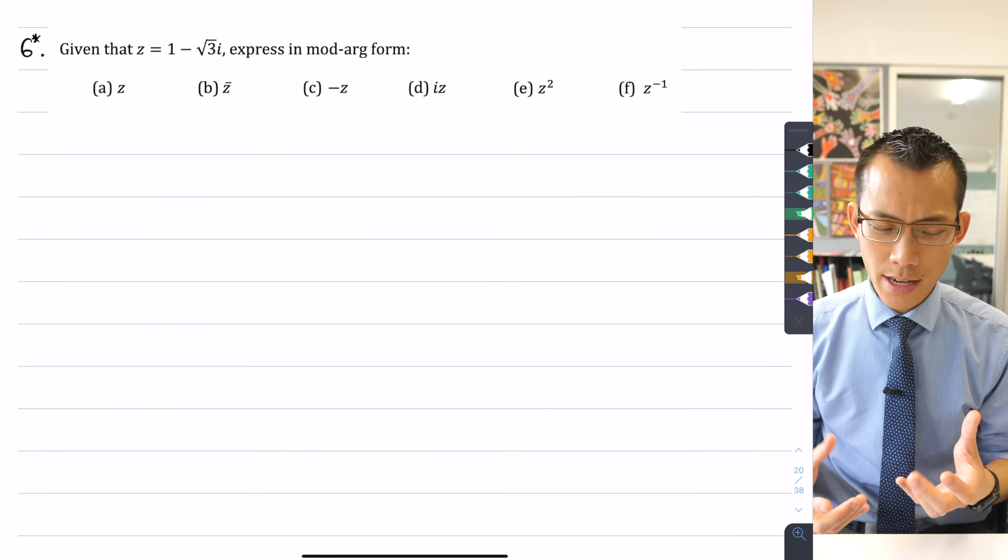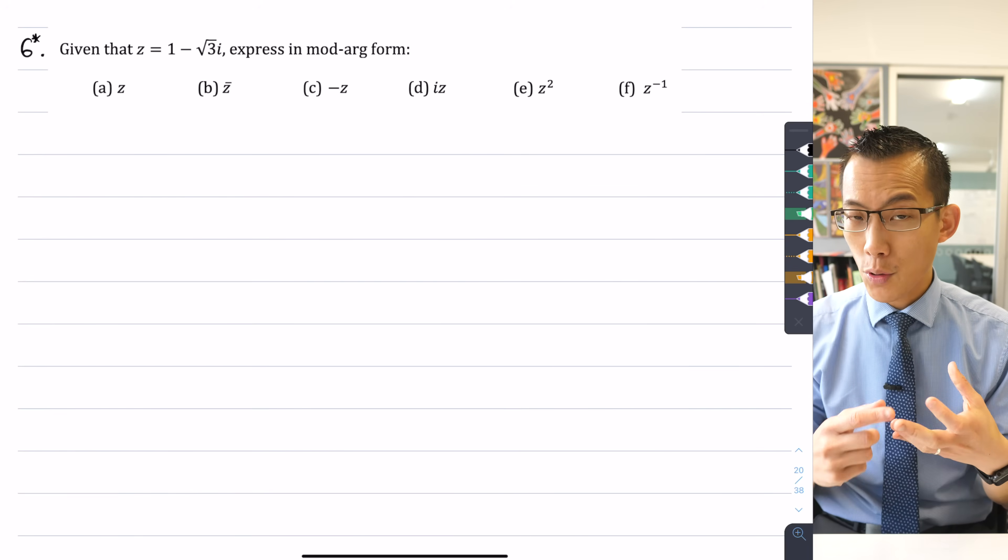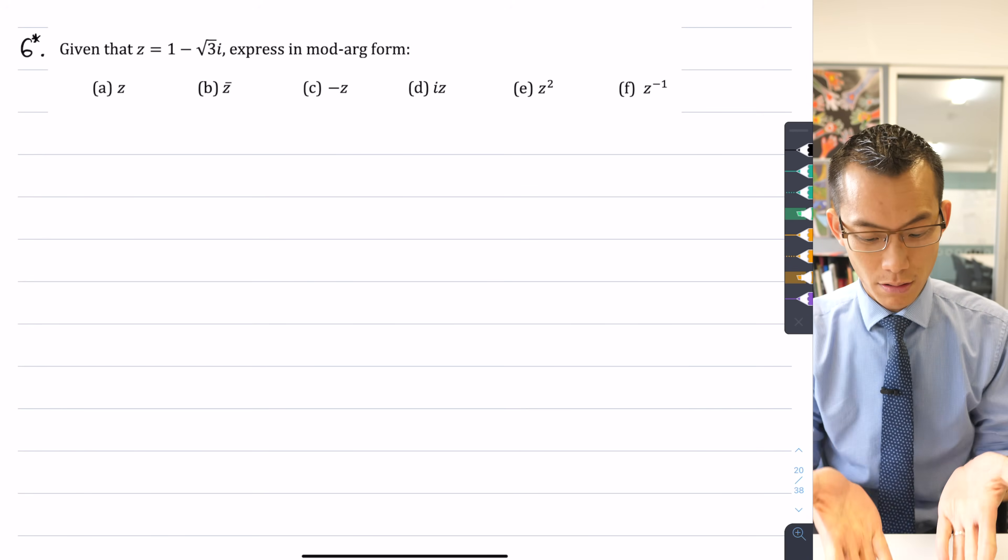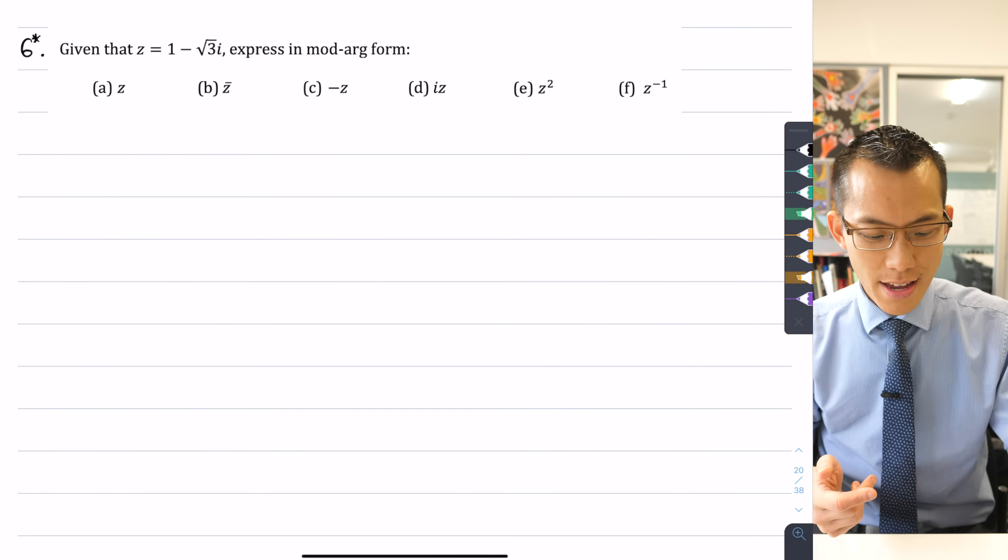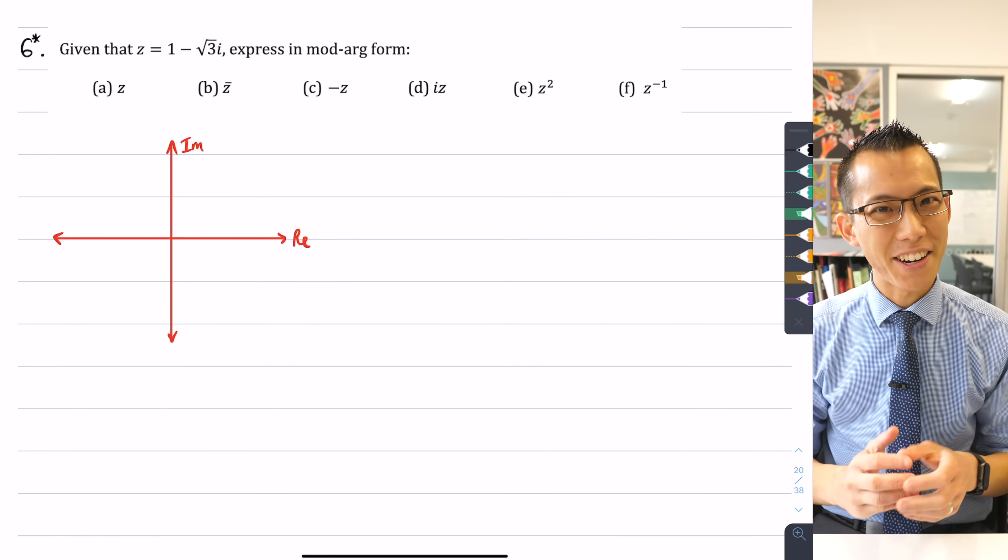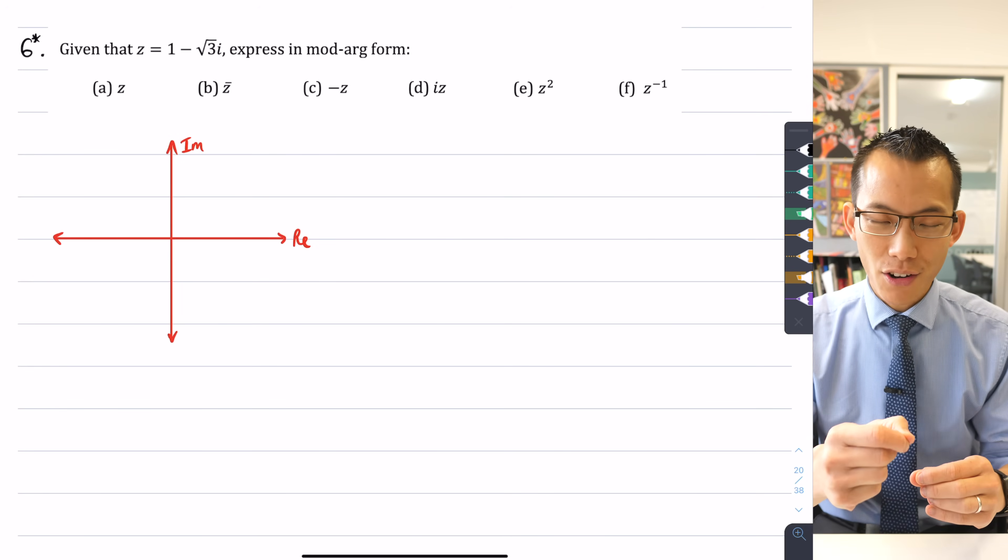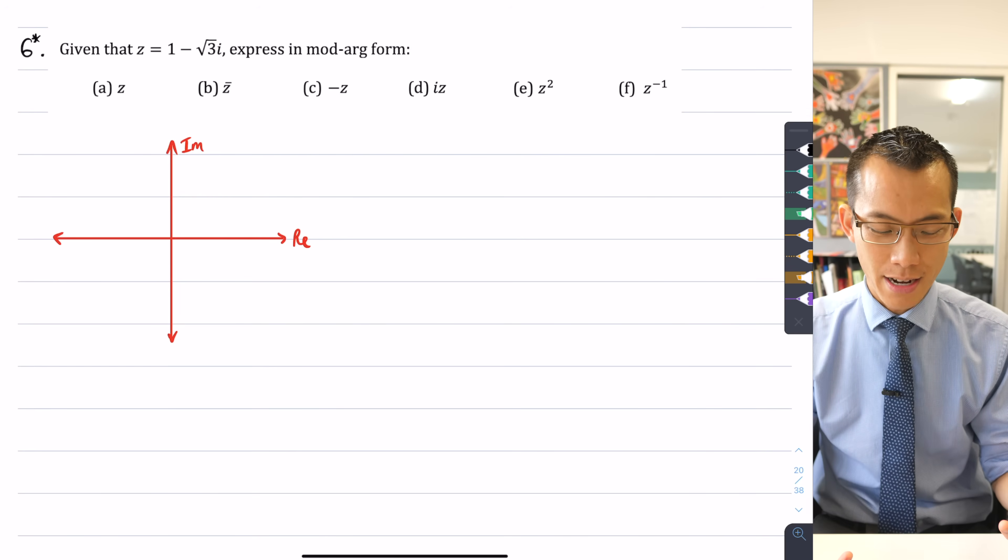Now, because all that stuff that I just said, distance, angle, they're all very visual things, the first thing I'm going to encourage, even though the question doesn't state that you have to do it, is we should draw a diagram. We should get a complex plane here and plot our complex number onto this complex plane, so we have an argand diagram.